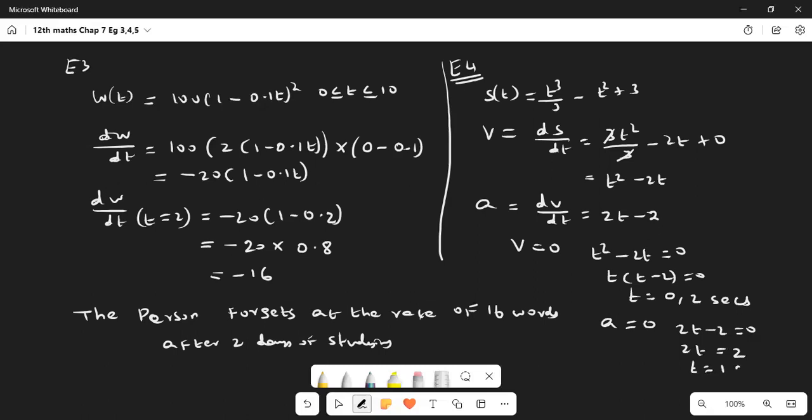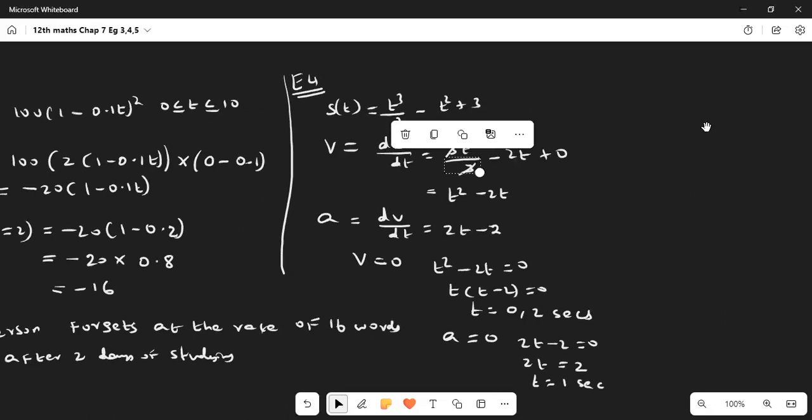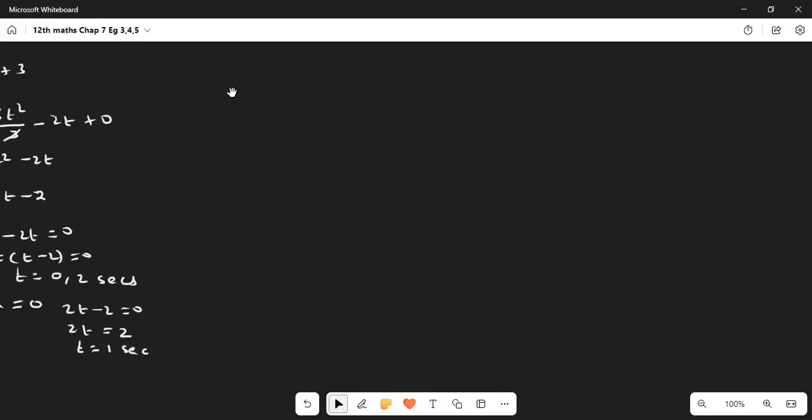Next, Example 5. A particle is fixed straight up from the ground to reach height of s feet in t seconds. s(t) is given by s(t) = 128t - 16t².